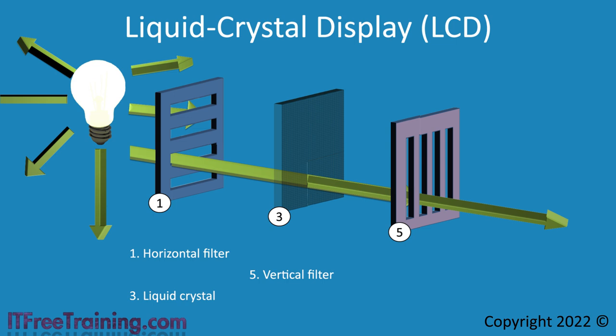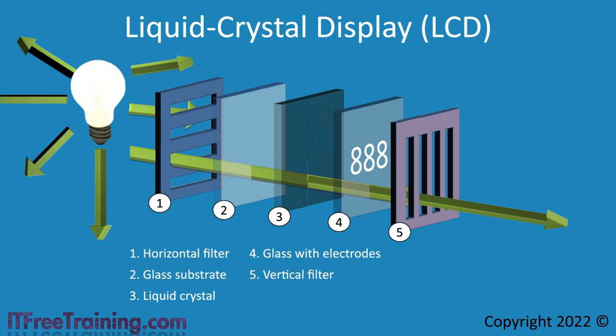As we are using liquid crystal, we need a way of holding it in place, so a glass layer is used designed not to block or scatter the light. Another glass layer with electrodes is added to allow electricity to be applied to small parts of the liquid crystal layer, controlling how much light is transferred through it. To get color, a final layer is tinted in three different colors. This is the fundamental method used to display pixels on an LCD screen, and different LCD screens will use different methods to control the process.